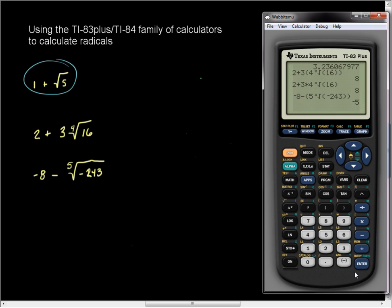I knew that I was going to get negative 5 because the 5th root of negative 243 is negative 3. Negative 8 minus a negative 3 is negative 8 plus 3, which is negative 5.